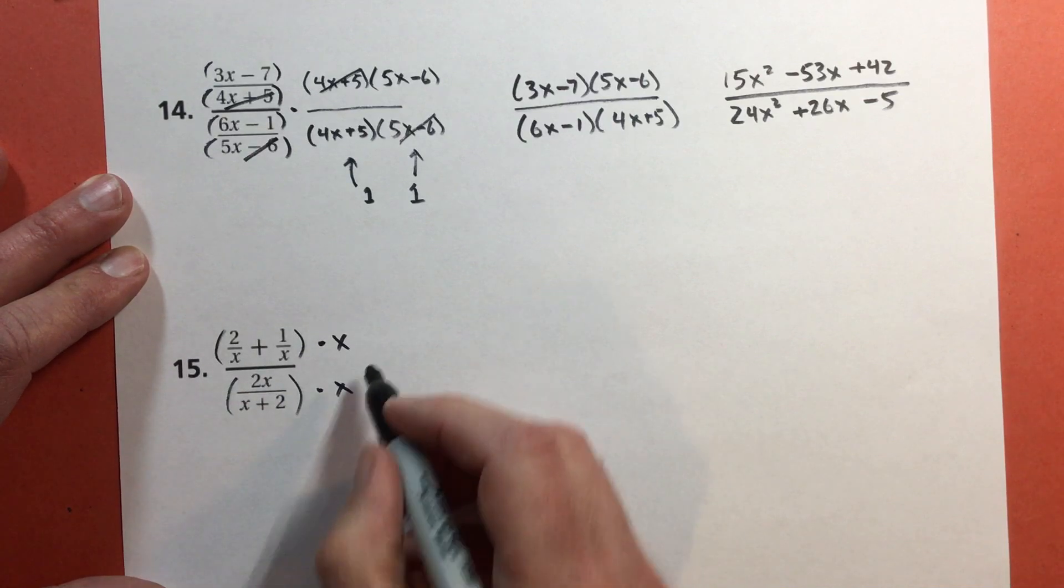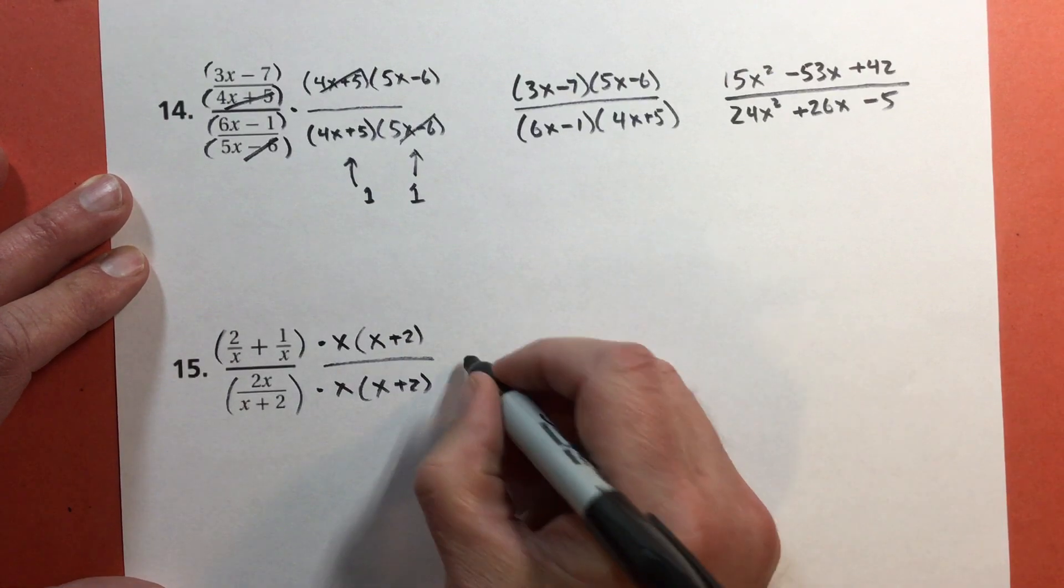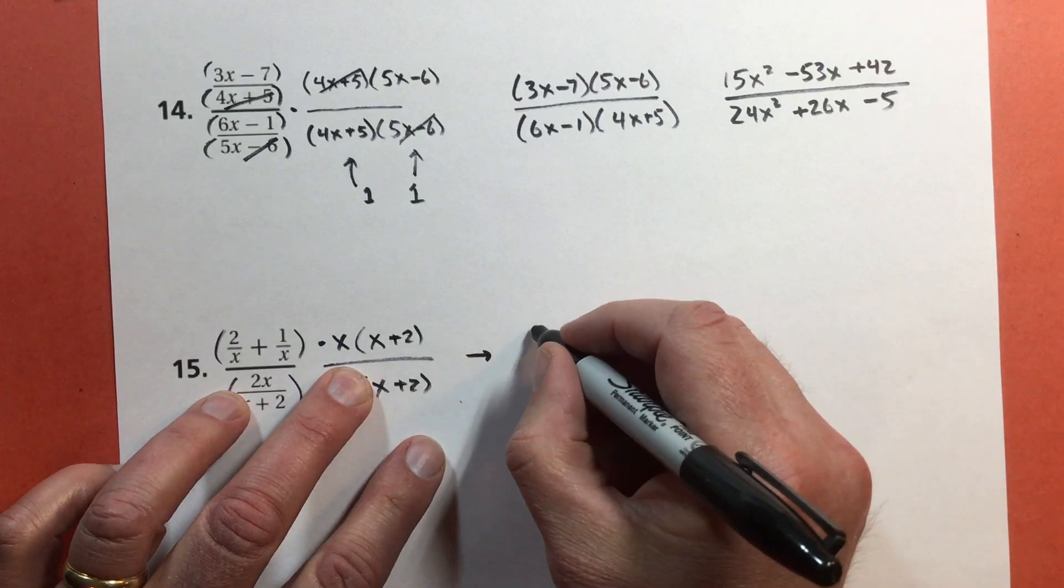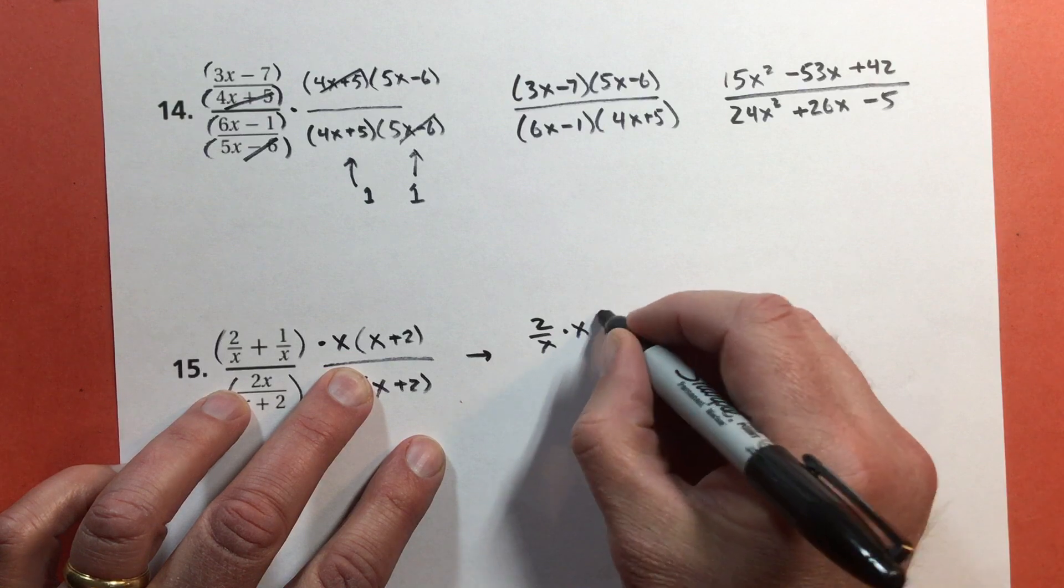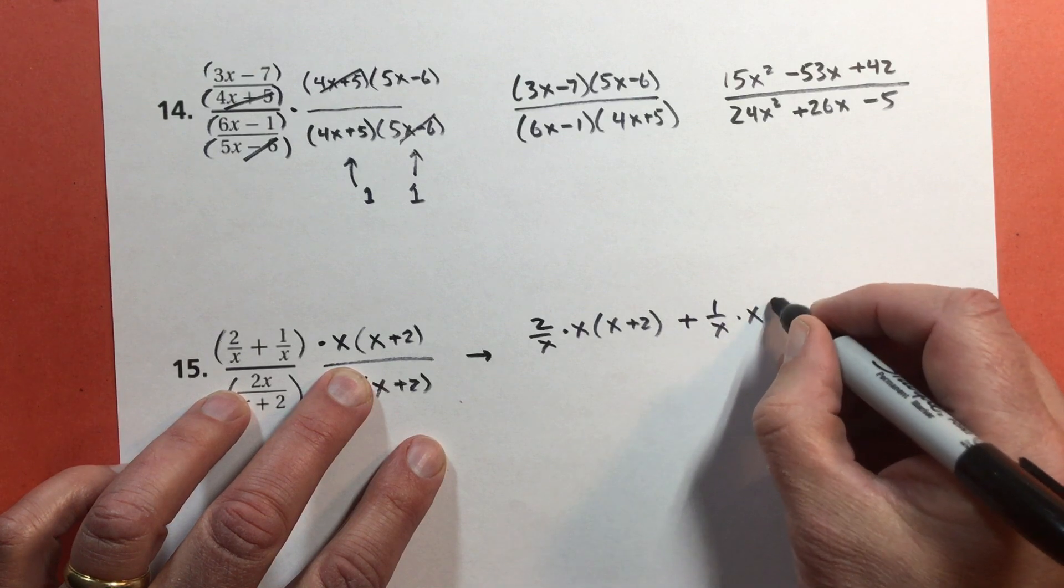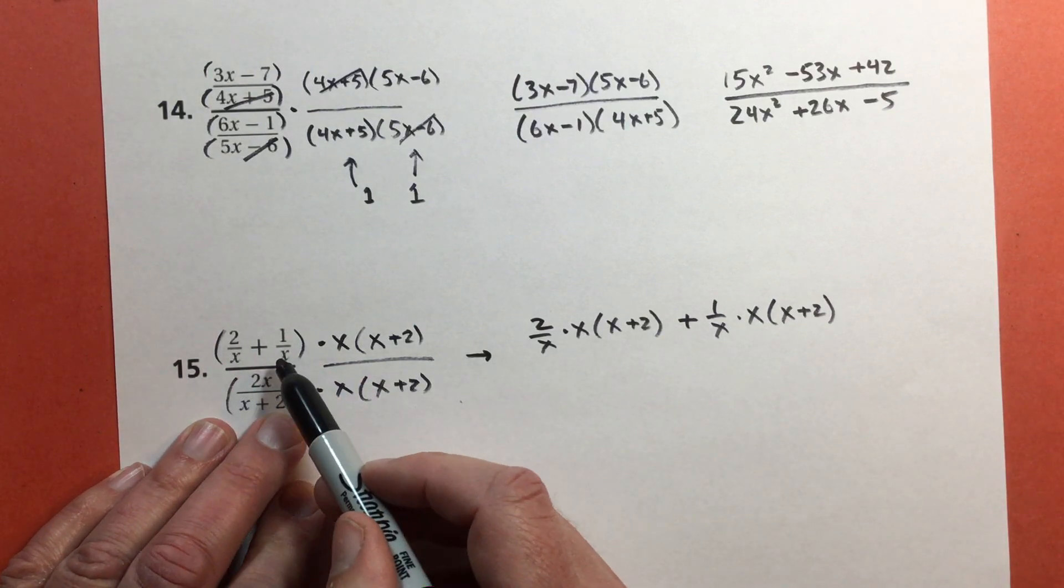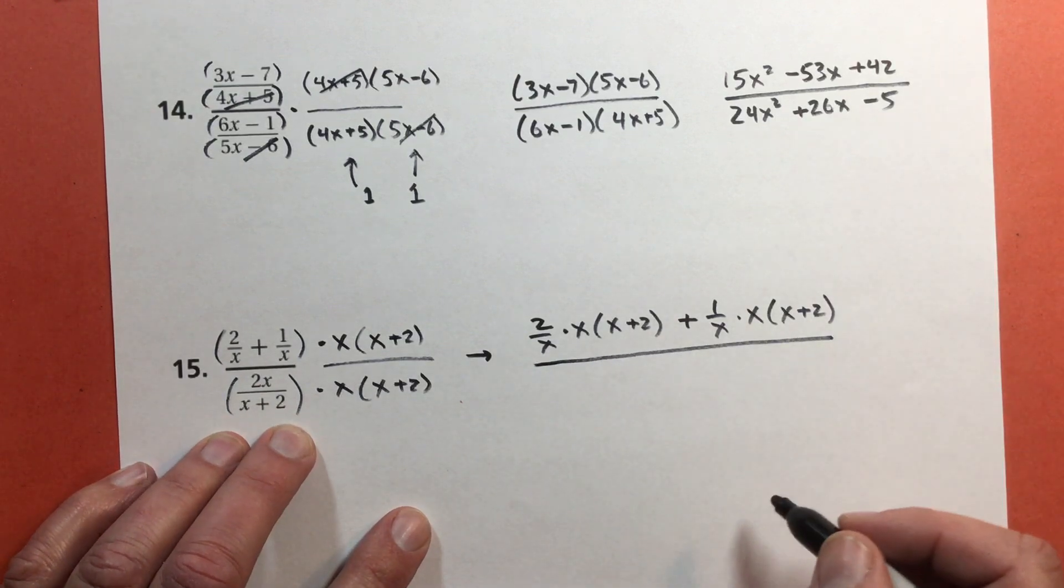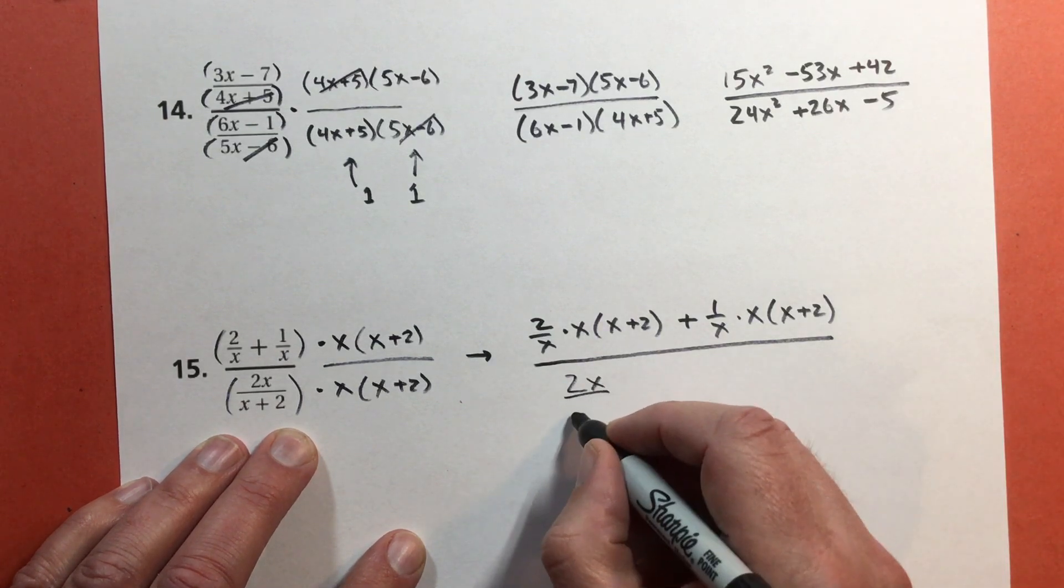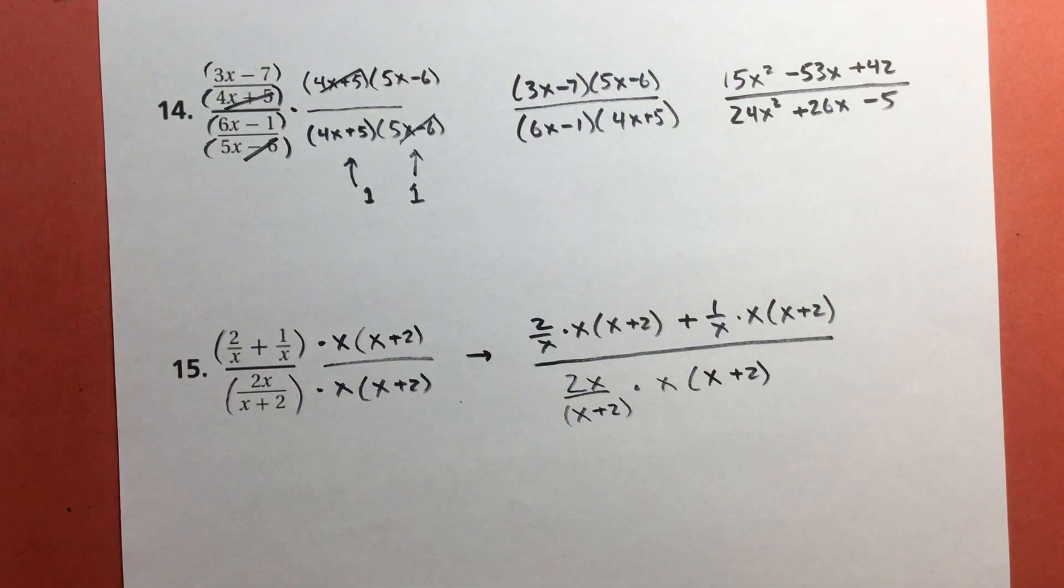I'm going to multiply by x over x. That's going to eliminate both of these. I'm also going to multiply by x plus 2 over x plus 2. I just have to distribute what's going on here. So think of it this way. This is going to be 2 over x times x times x plus 2 plus 1 over x times x times x plus 2. This is where I'm thinking I probably should add those together, but I'm doing this on purpose to show you that if you don't combine these, then you'll have to use distribution. And then here I get 2x over x plus 2 times x times x plus 2.